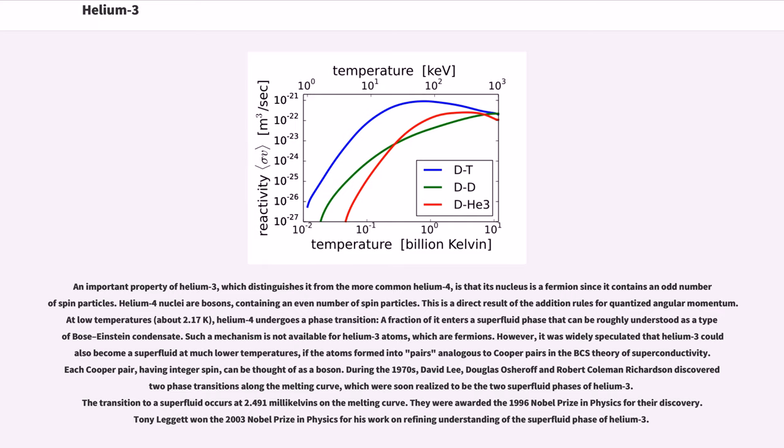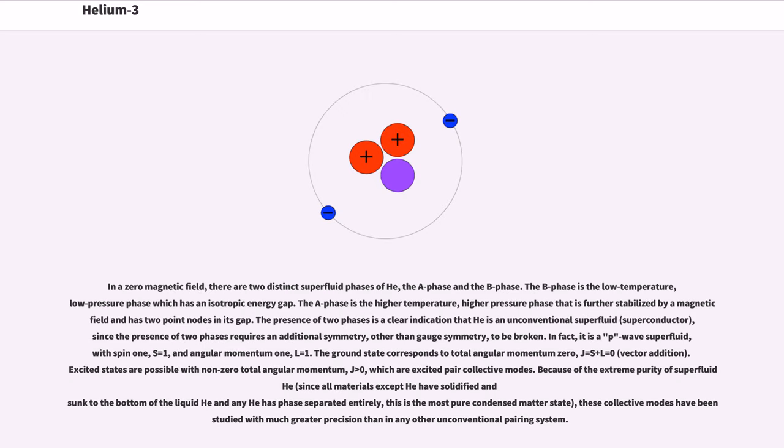During the 1970s, David Lee, Douglas Osheroff and Robert Coleman Richardson discovered two phase transitions along the melting curve, which were soon realized to be the two superfluid phases of helium-3. The transition to a superfluid occurs at 2.491 mK on the melting curve. They were awarded the 1996 Nobel Prize in Physics for their discovery. Tony Leggett won the 2003 Nobel Prize in Physics for his work on refining understanding of the superfluid phase of helium-3.